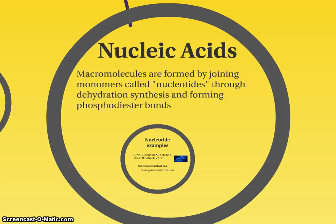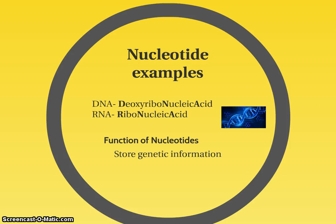For nucleic acids, the bond is called a phosphodiester bond. I'm not going to show you the molecular structures here — we'll get into that when we study DNA and RNA in much more detail in genetics. The two nucleic acids you need to know about are DNA, which stands for deoxyribonucleic acid, and RNA, which stands for ribonucleic acid. These are both made of nucleotides, and their job, for right now, is to store genetic information — that would be the blueprint for an organism.